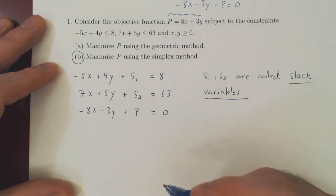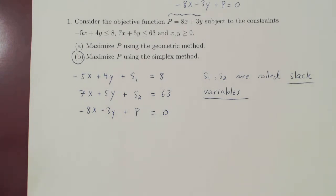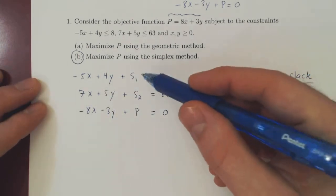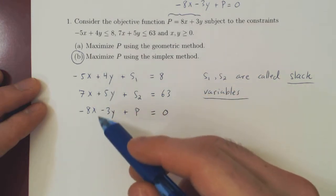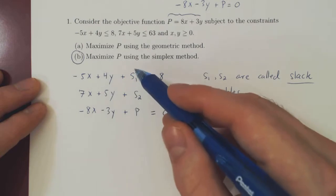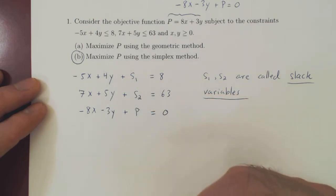Step two is complete. Now we will form the so-called simplex matrix. Because what we have now is a linear system in three equations, but now five variables: x, y, s1, s2, and p.